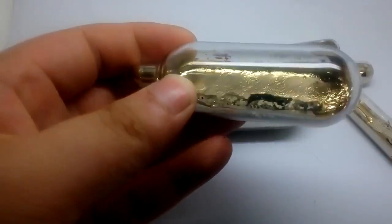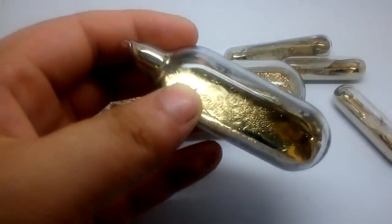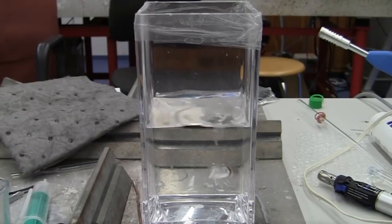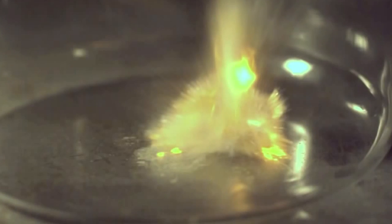It's so reactive, in fact, that it must be stored in oil because the water in the air is enough to begin a reaction. Upon contact with water, cesium instantly explodes and, if present in high enough quantities, will form hydrogen gas, which further increases the size of the blast.